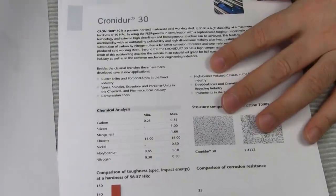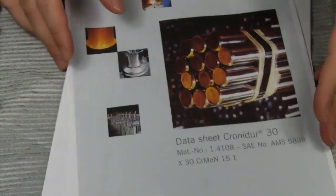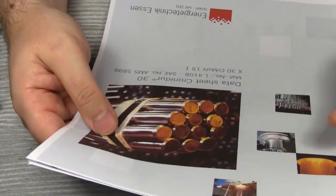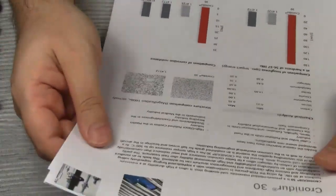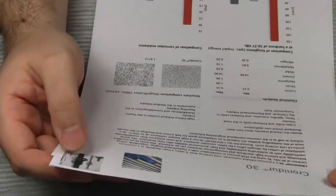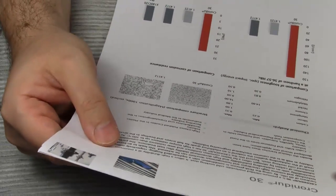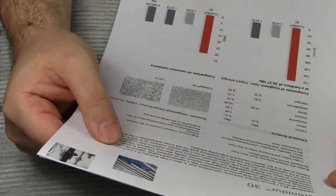It gives you the chemical analysis, lots of details on the heat treatment, etc. I have to admit that most of it sounds like Chinese to me. I will provide a link to this datasheet in the description box for all the steel fetishists among my viewers. For me, the most important statement is this: The partly substitution of carbon by nitrogen offers a far better corrosion resistance and wear resistance than conventionally produced cold working steels.